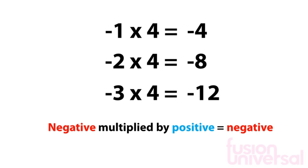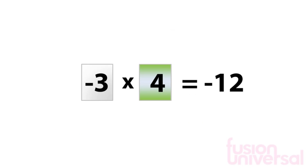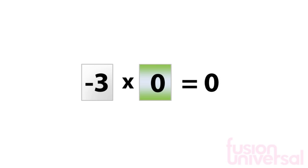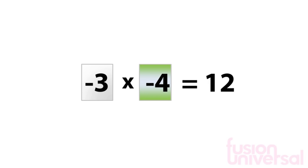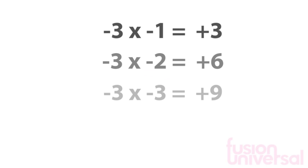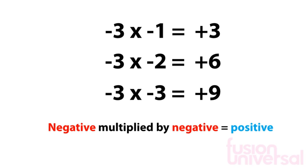We can combine the two by starting to work down the negative times table. This time, each time we reduce the number we are multiplying by, the product increases by 3. We can repeat this process to give us another negative times table, and we can see that a negative multiplied by a negative gives a positive product.